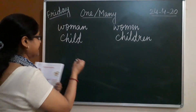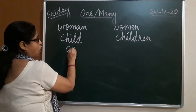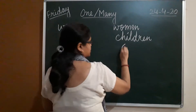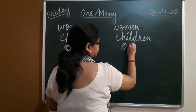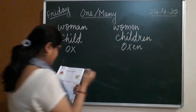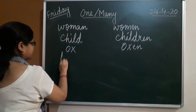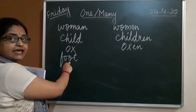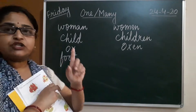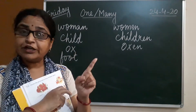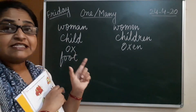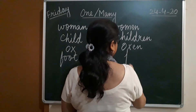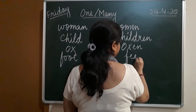Next, as I told you, the plural of ox is 'oxen'. Then the plural of foot — when we talk about one foot it is 'foot', and when we talk about both feet, we say 'feet'.